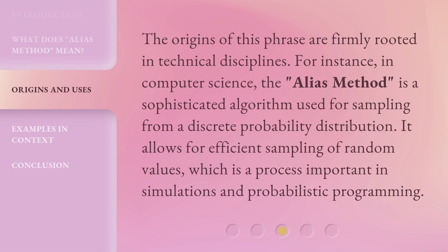The origins of this phrase are firmly rooted in technical disciplines. For instance, in computer science, the alias method is a sophisticated algorithm used for sampling from a discrete probability distribution. It allows for efficient sampling of random values, which is a process important in simulations and probabilistic programming.